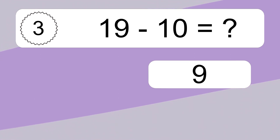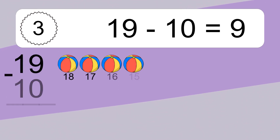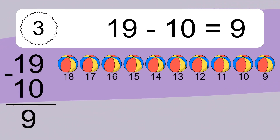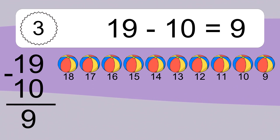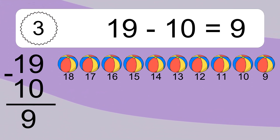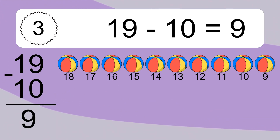19 minus 10 equals what? 19 minus 10 equals 9. Let's count it: 18, 17, 16, 15, 14, 13, 12, 11, 10, 9.